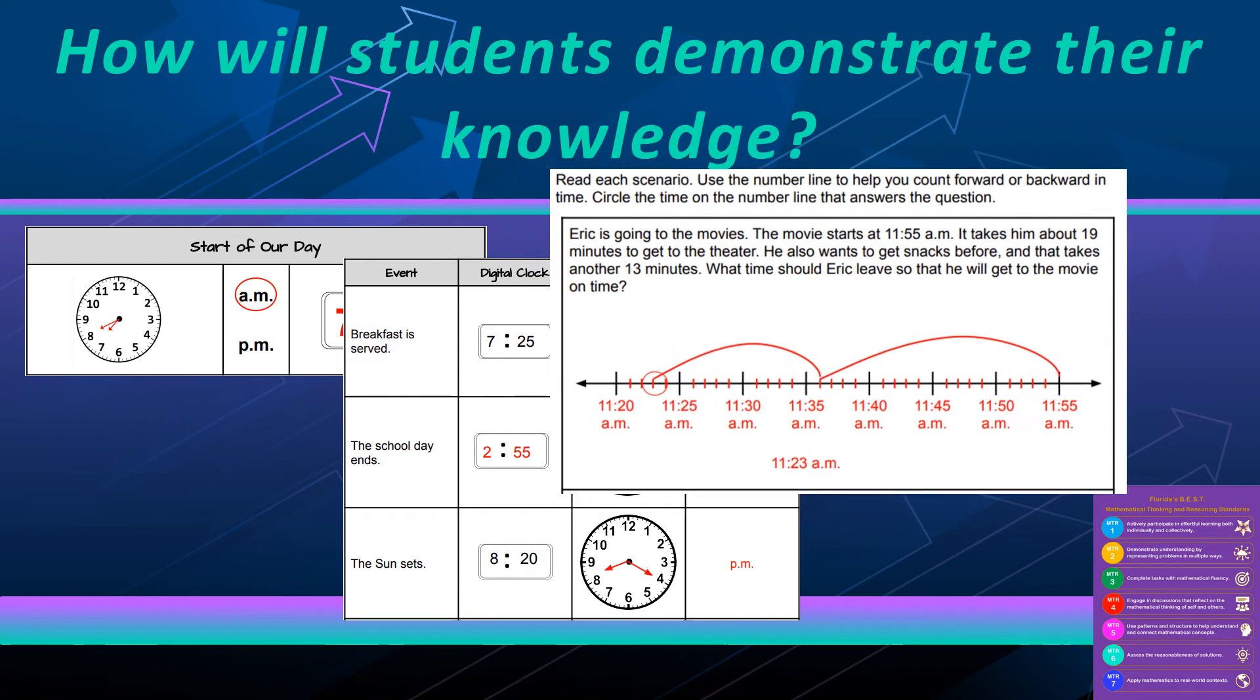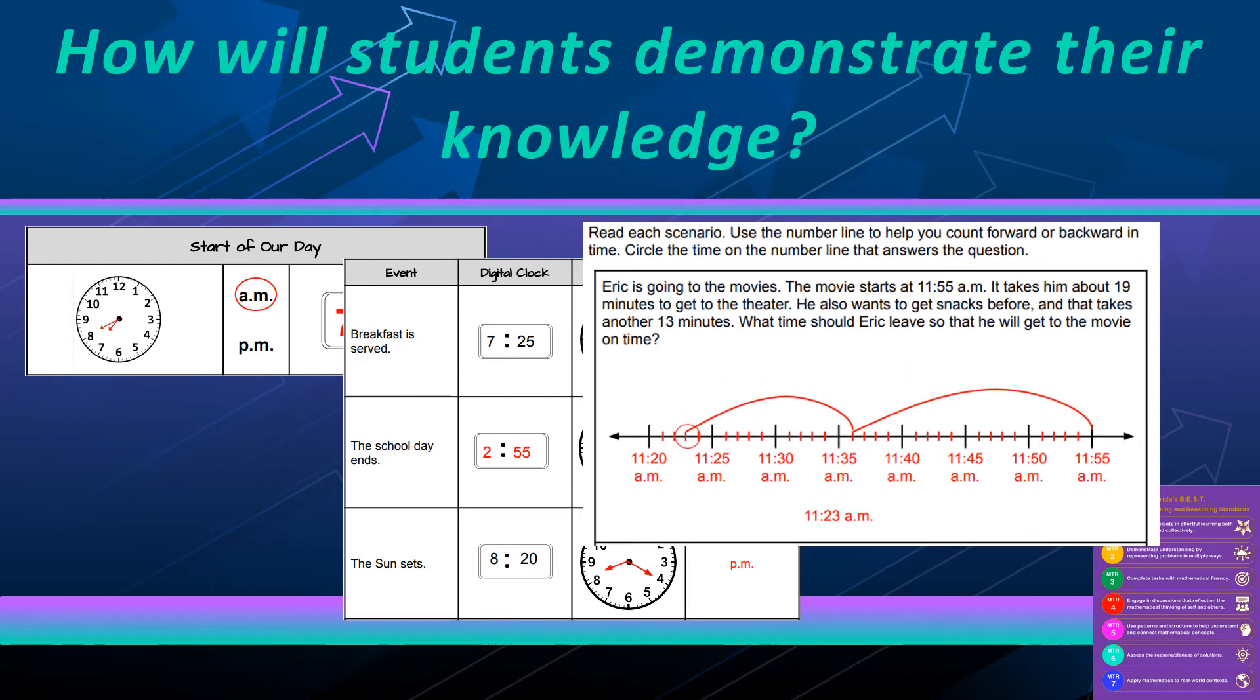Finally, this last task card shows the student is working with a word problem that is one and two step, and then they use number lines to determine the elapsed time or what time the scenario ends at.